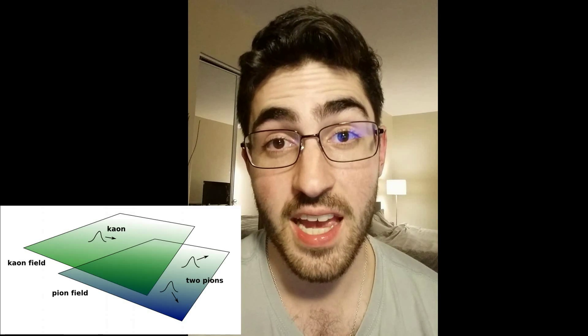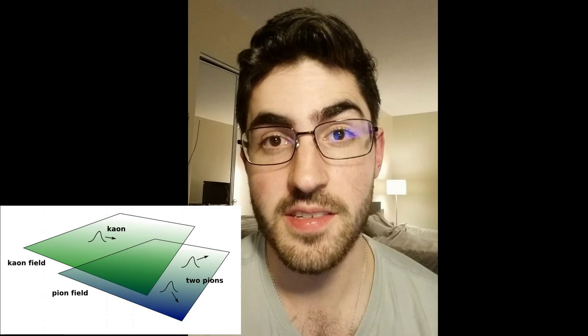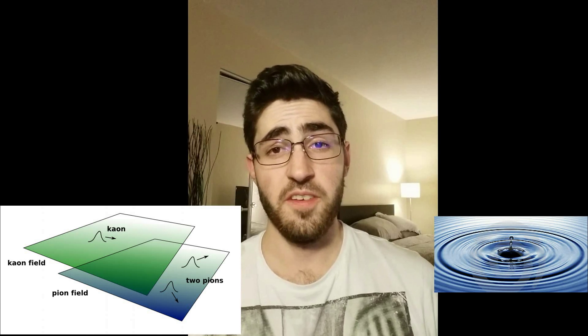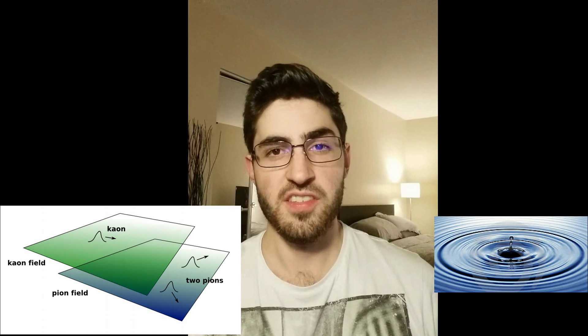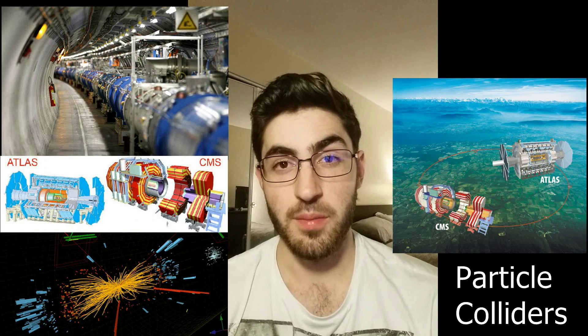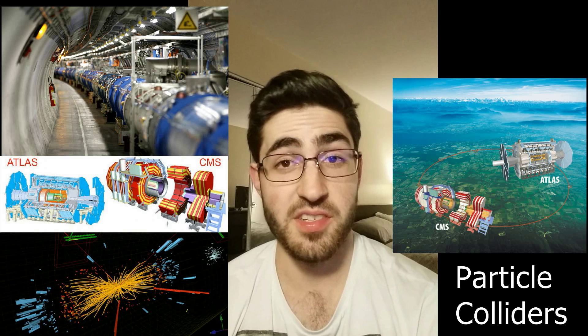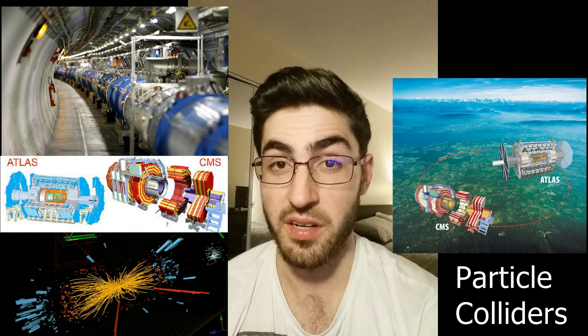Particles are actually excitations of fundamental fields. Take for example the electron — the electron is simply an excitation of the electron field. And so it is for the Higgs boson: the Higgs boson is an excitation of the Higgs field. You can think of a field excitation in the same way you think of ripples on a still pot. Now, if we produce enough energy at a point, we can excite the Higgs field and create a Higgs boson. And this is useful, because unlike the Higgs field, the Higgs boson can be detected.